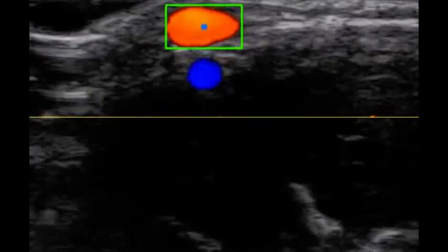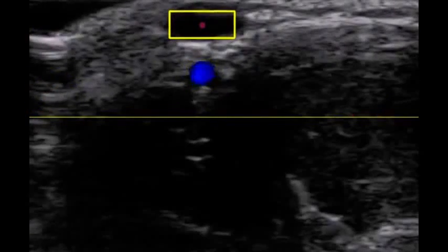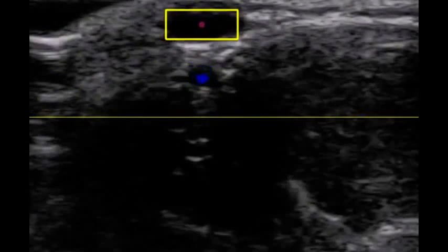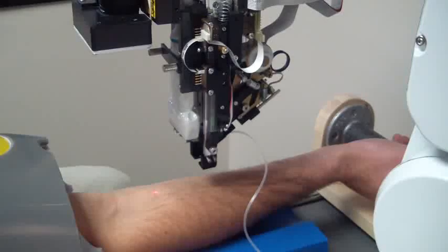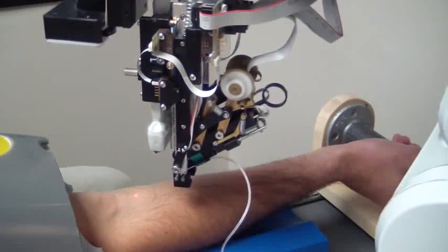Once the V-Bot system selects a target vein, it turns to ultrasound to confirm that the selected vein has sufficient blood flow for a successful blood draw. The robot then aligns the needle and sticks it in. The whole process takes about a minute.